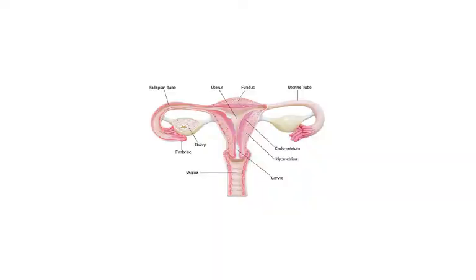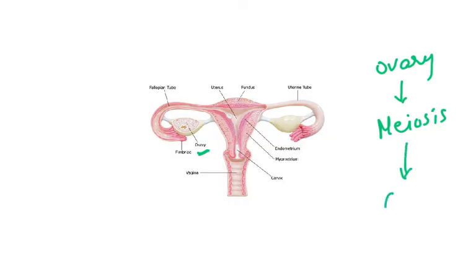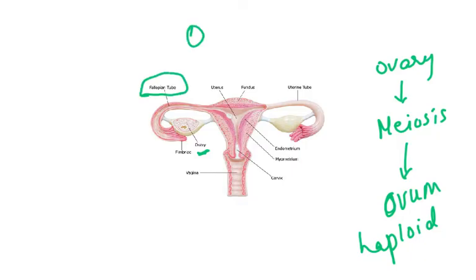Looking at the female reproductive system, we have to understand the ovary, which is the reproductive organ where meiosis takes place — the reduction division. The ovum has to be produced as a haploid, with half the number of chromosomes, so that when fertilization takes place and it fuses with the sperm, the diploid number is restored. Then the important structure is the fallopian tubes, also called oviducts — two oviducts, one on either side.